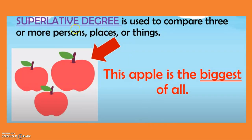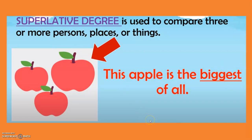Superlative degree is used to compare three or more persons, places or things. Here there are three apples. One is big, one is bigger, and the other is the biggest. So we say: this apple is the biggest of all. See the spelling here — you put double-G and EST. So when EST comes, it is superlative degree. I hope you understood these three examples of positive, comparative and superlative degree.